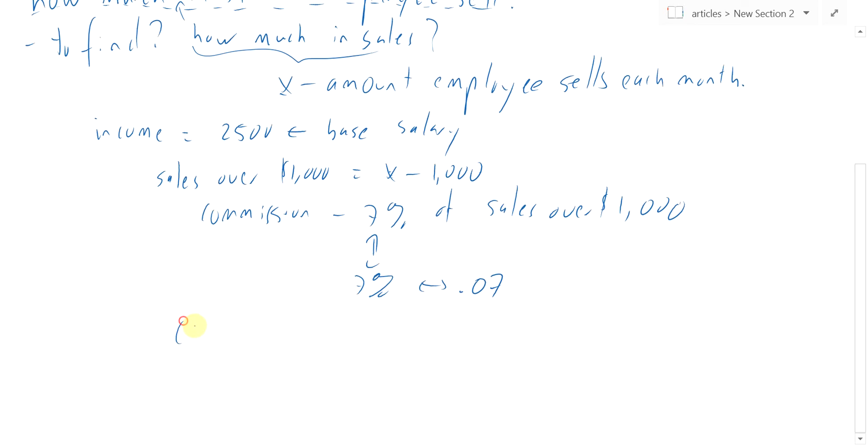So what is their actual commission? It's 7% of their sales over $1,000, so it's 0.07 of X minus $1,000. This is the amount that they sell. X minus $1,000 is the amount that they get commissioned on. And then 7% of that is how much they actually earn in commissions. So 0.07 times X minus $1,000.